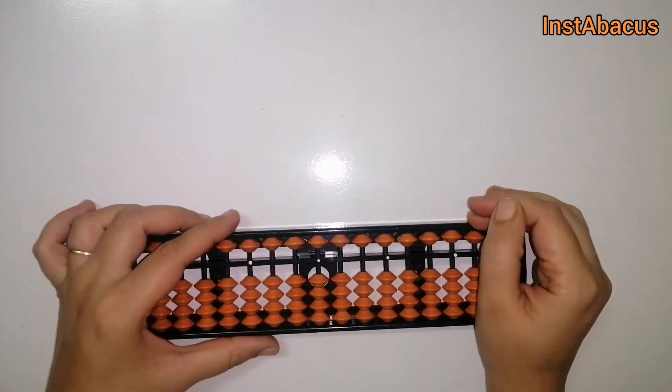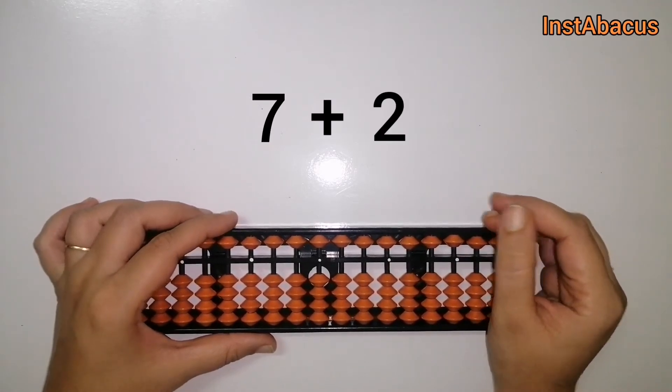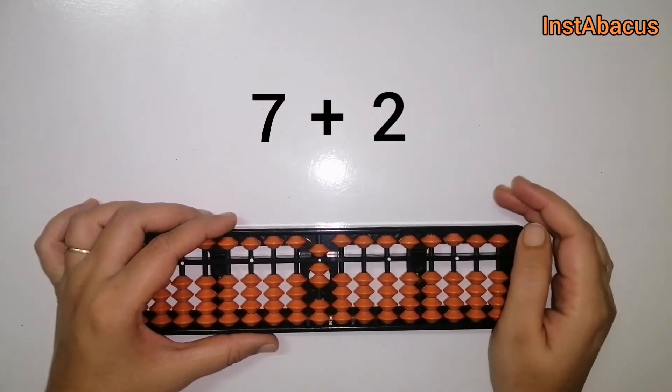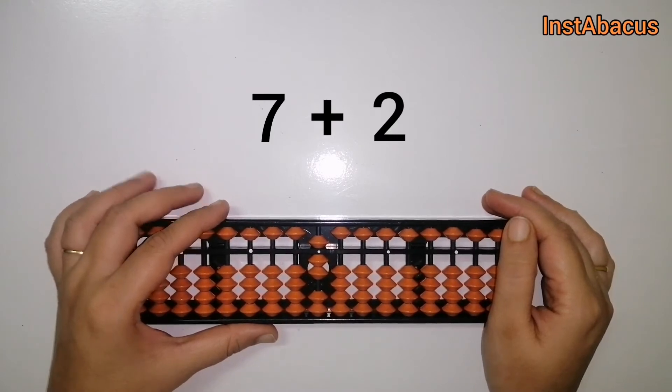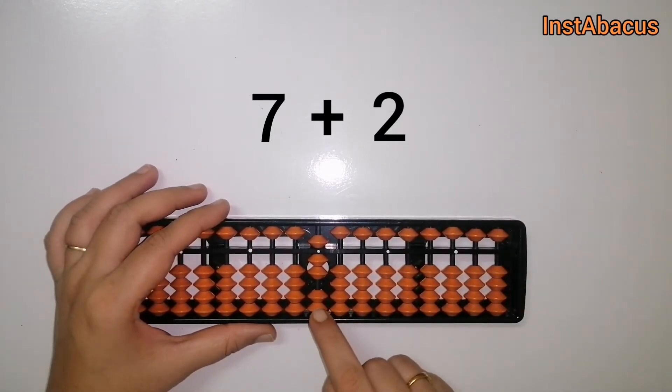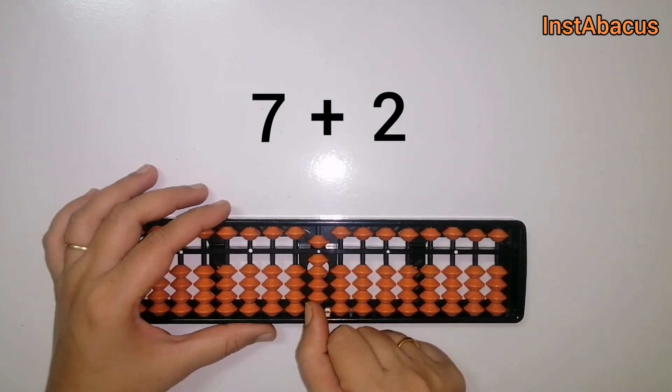Seven plus two. This is seven on our abacus, and now to that we are going to add two. Let's move these two earthly bits here towards the answering bar to add two.